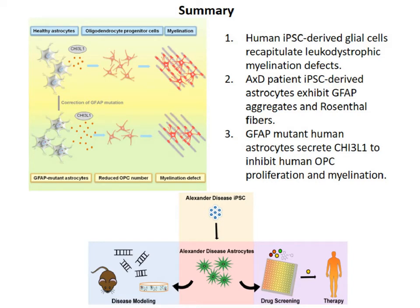In summary, I have shown that human iPSC-derived glial cells could recapitulate leukodystrophy myelination defect in Alexander disease, which could not be seen in any rodent models. The AXD patient iPSC-derived astrocytes could exhibit key pathological features of the disease including GFAP aggregation and Rosenthal fibers. Moreover, we have identified CHI3L1 as the key downstream mediator — the GFAP mutant human astrocytes secrete CHI3L1 to inhibit human OPC proliferation and myelination. These iPSC-derived models could serve as a drug screening platform to develop potential therapies for Alexander disease in the future.